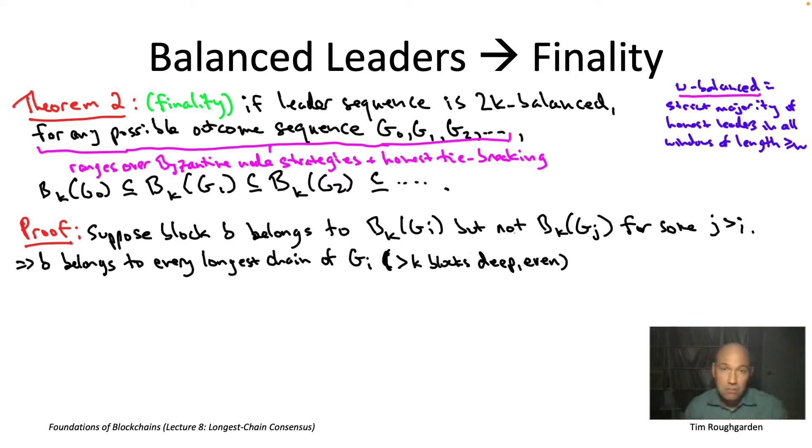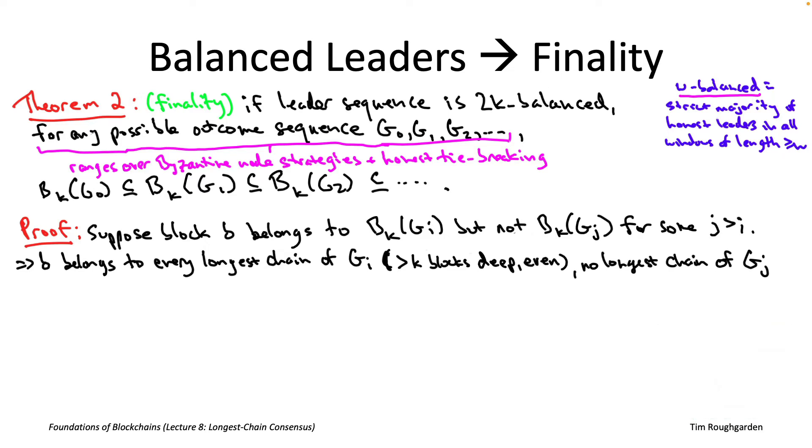Meanwhile, by virtue of not belonging to b sub k of the later graph, of the later entry g sub j, if you think about it, this block b must not be in any longest chain of g sub j. After all, g sub j, it's later in the sequence, it has only more blocks than g sub i, so its longest chains are only longer than those in g sub i. And so that means, if the block little b belonged to any longest chain of the graph g sub j, it definitely would be more than k deep, because it was more than k deep even in the shorter chains in g sub i. So, if it was more than k deep on some longest chain, then little b would belong to the set b sub k of g sub j. So, by virtue of not being in that set, it can't be in any of the longest chains in this later entry g sub j.